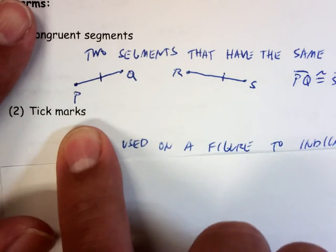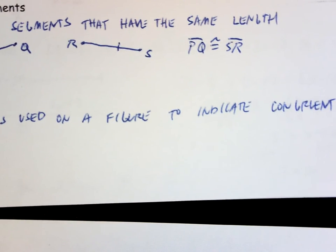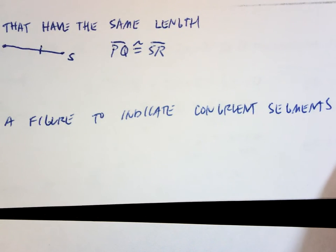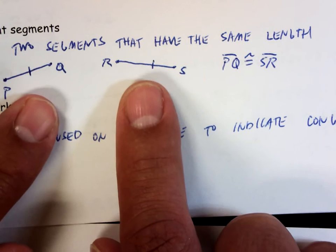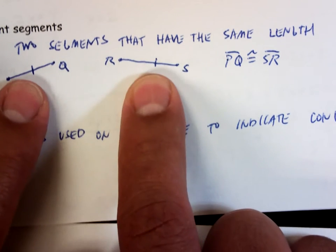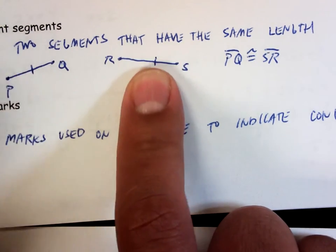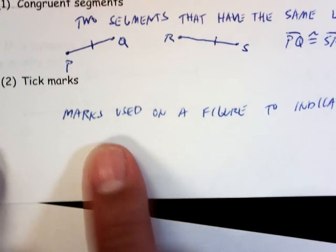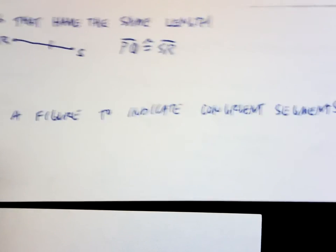Tick mark. What's a tick mark? It's these little marks up here. They are used on a figure to indicate congruent segments. So you can't ever just look at two segments and say, you know what, those look like the same size, so they must be. They must tell you in some way. That's got one tick mark. That's got one tick mark. These must be the same no matter how they look.